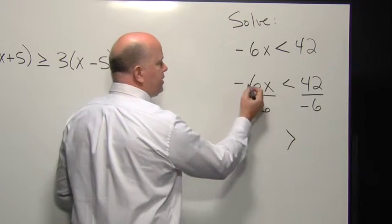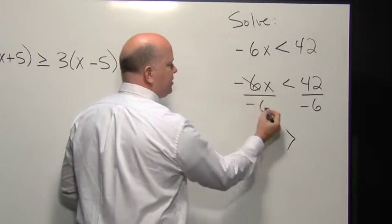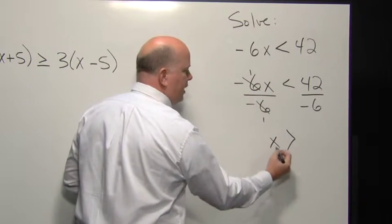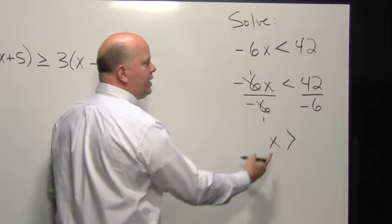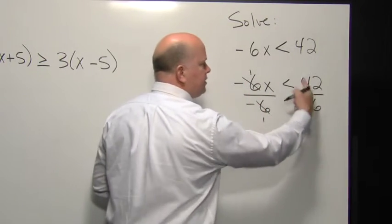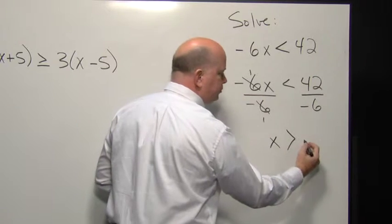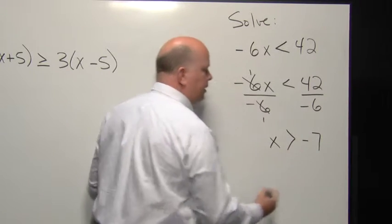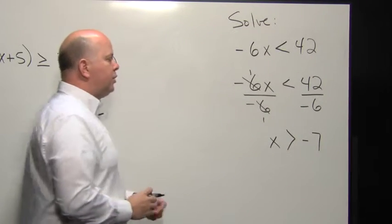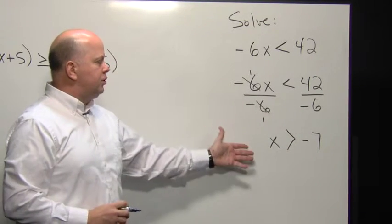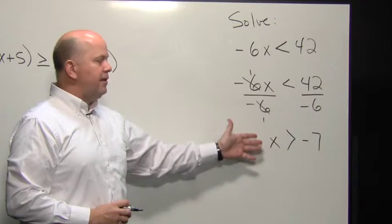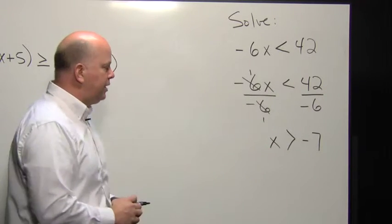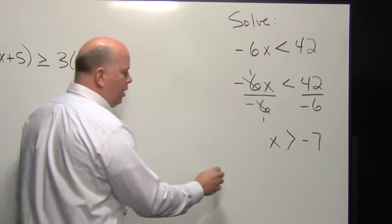Negative six divided by negative six is one. Therefore, we have one X. This division gives negative seven. So here we have the solution set of X is greater than negative seven.